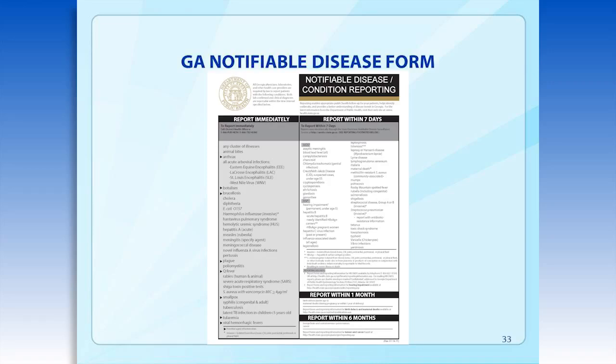Who is required to report? This is in the top block and includes physicians, laboratories, and other health care providers. Additionally, any cluster of illnesses is to be reported, and the state health department then determines if that cluster is unusual. Health departments want to know about disease clusters — for example, before 1999, West Nile virus had not occurred in the U.S. Health departments have been able to capture new or re-emerging infectious diseases when clusters were reported, as was the case with West Nile virus.